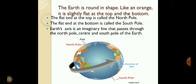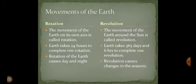So what is an axis? The earth's axis is an imaginary line that passes through the North Pole, the center, and the South Pole of the earth. The earth rotates on its own axis from west to east.